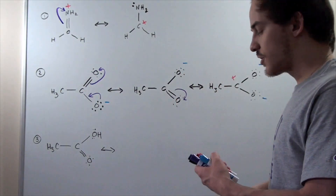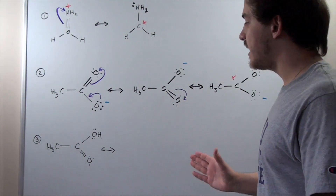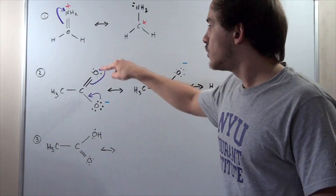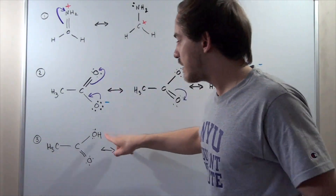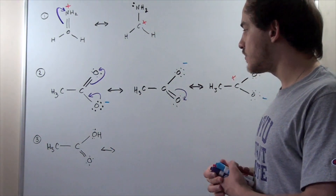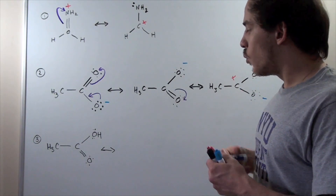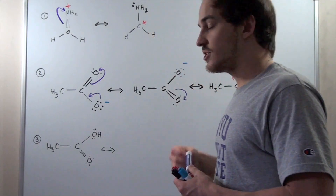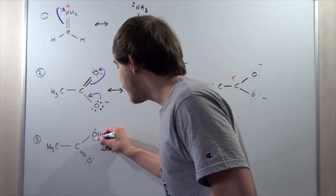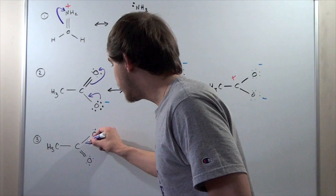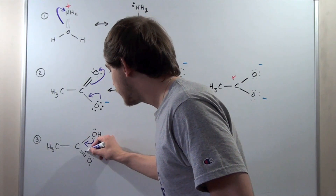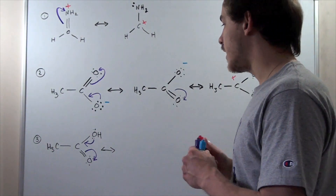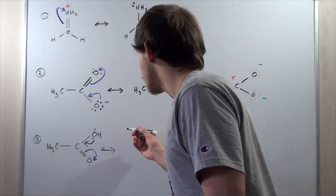Now let's jump to part three. In part three, we basically have a very similar structure, except now we have an H bonded to our oxygen, so we have a neutral atom. We can take this pair of electrons, place it here, and these electrons will move onto this oxygen, developing the following Lewis dot structure or resonant form.